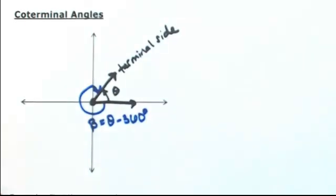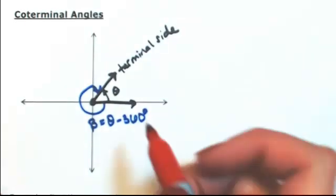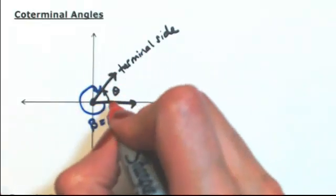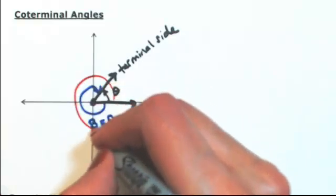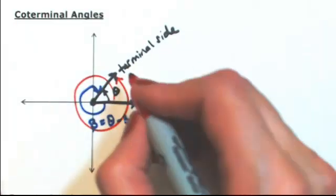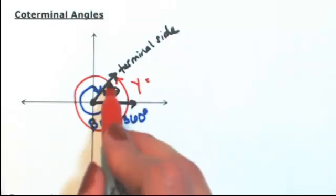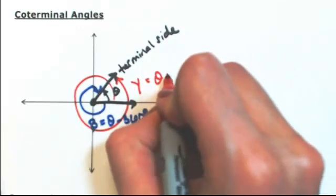Or maybe we can go a little further than that. Let's start from the same initial and terminal side, go past the initial and end at the terminal. Again, different angle, let's call that gamma. So I want one full revolution and then theta, so this is theta plus 360.